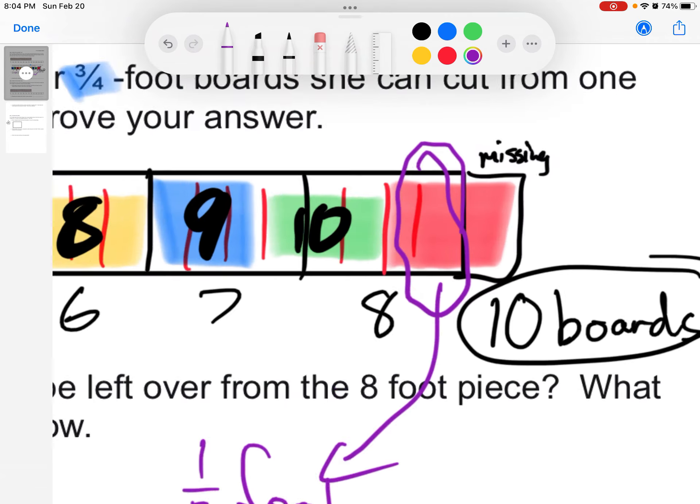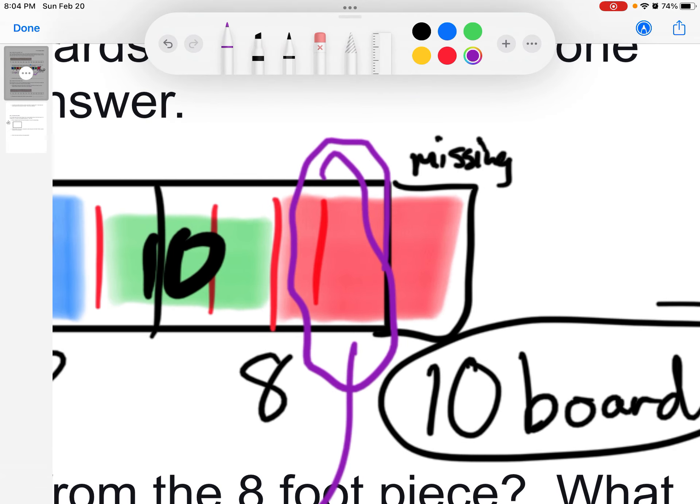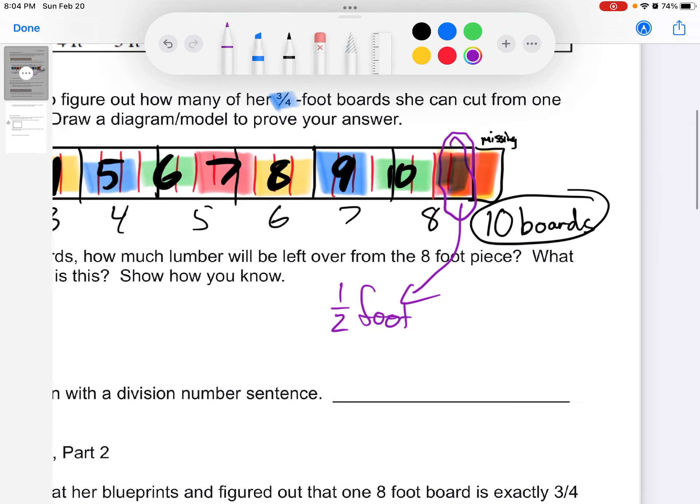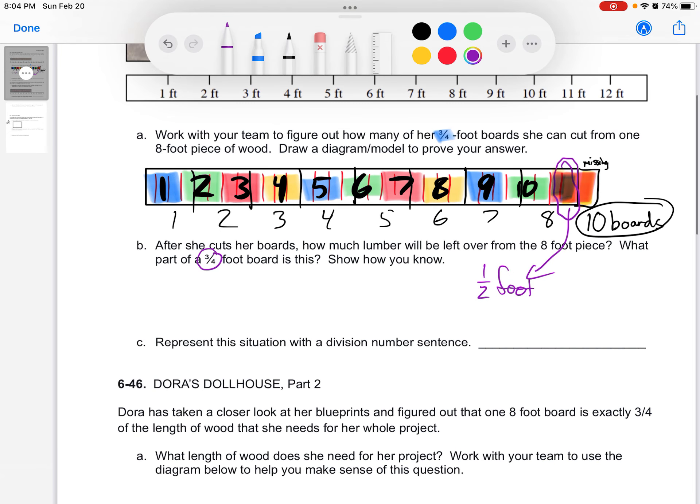Well, if you take a look at that, out of that three-quarter foot board, I have one, two, three-quarters, right? I'm going to try to highlight them in yellow so this will be one, two, three-quarter foot boards. But I only have one, two of those, right? So I have two out of those three pieces. So this is, to answer this question, I have two-thirds of a board left. Two-thirds of a board left.